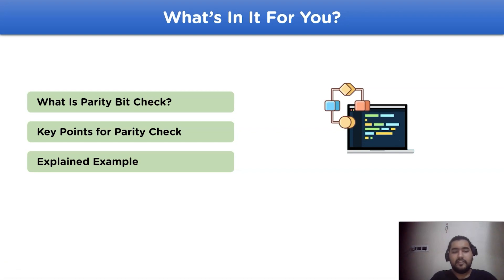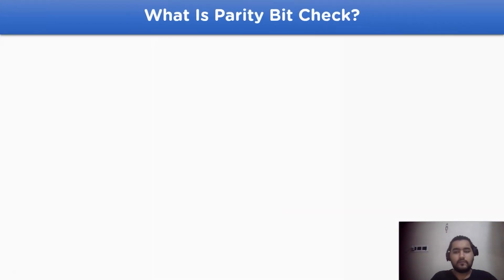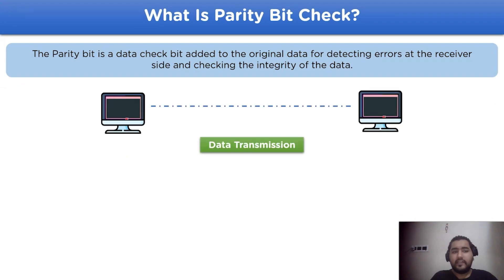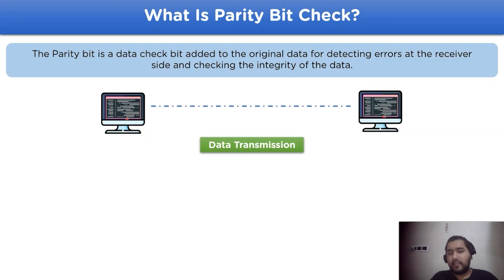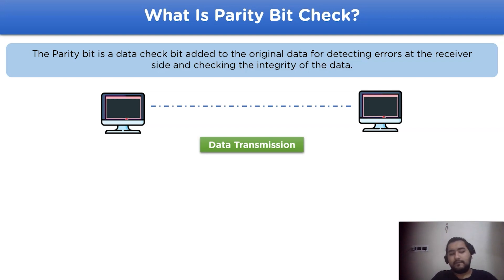Now let's continue with the first heading: what is parity bit check? The parity bit is a data check bit added to the original data for detecting errors at the receiver side by checking the integrity of the received data.